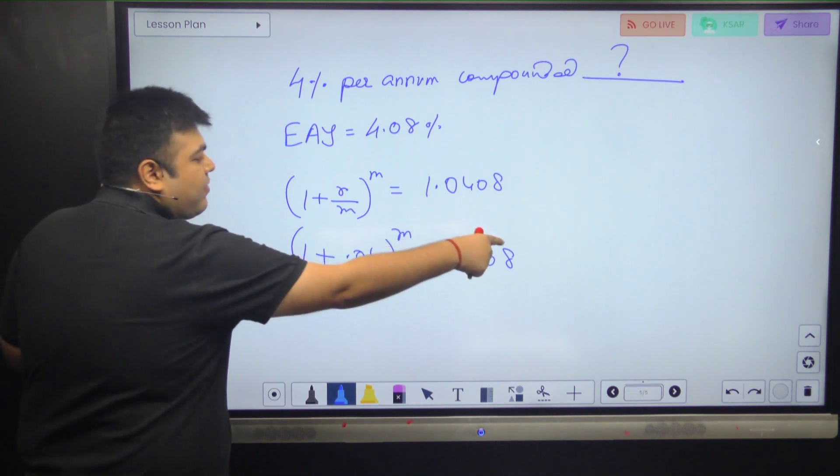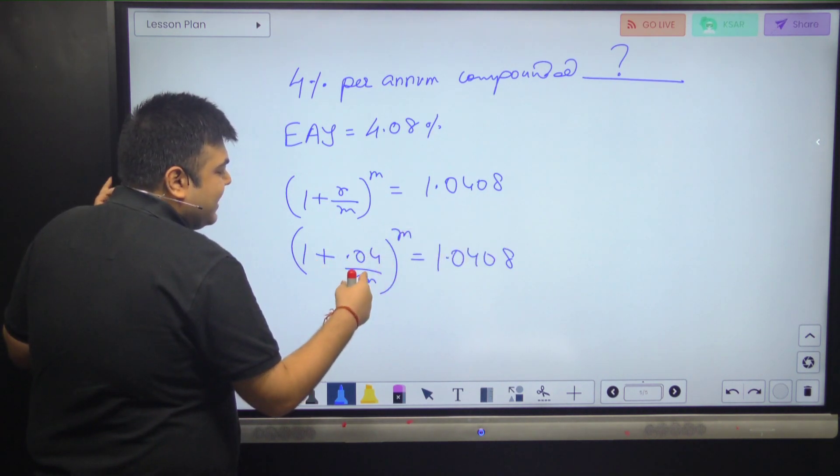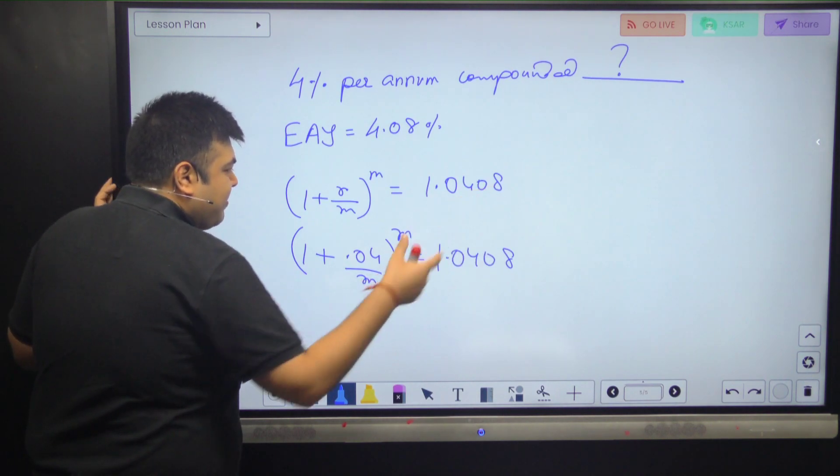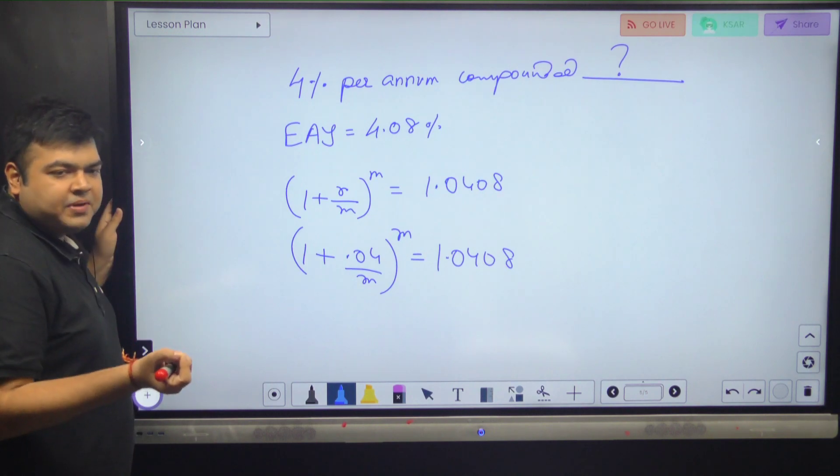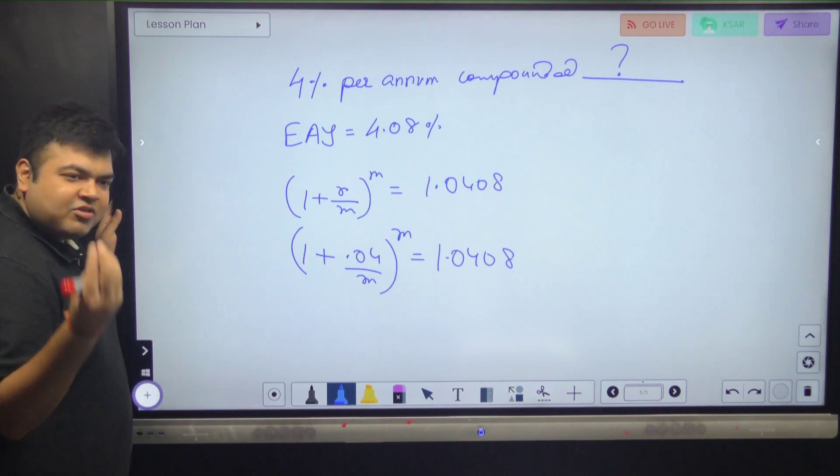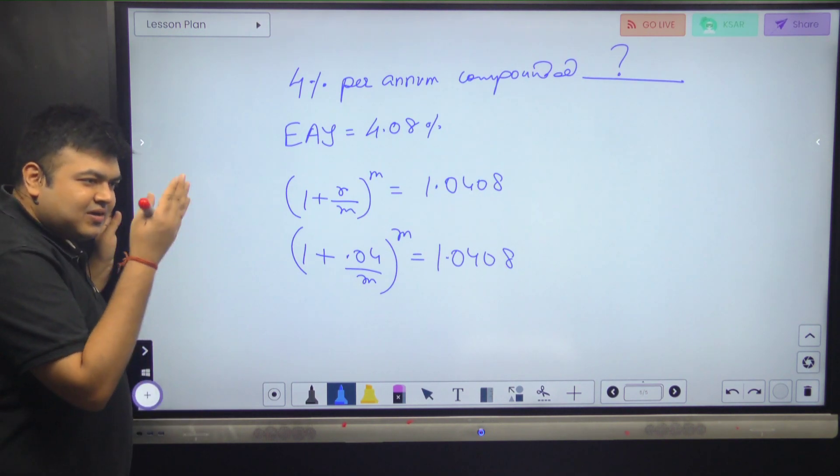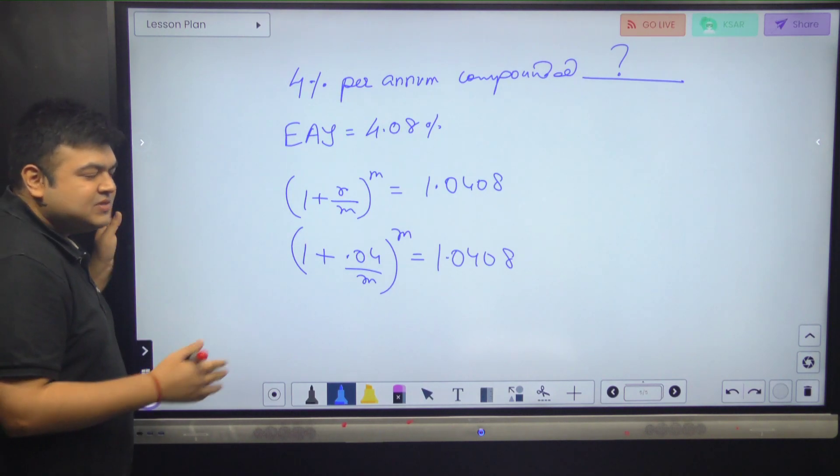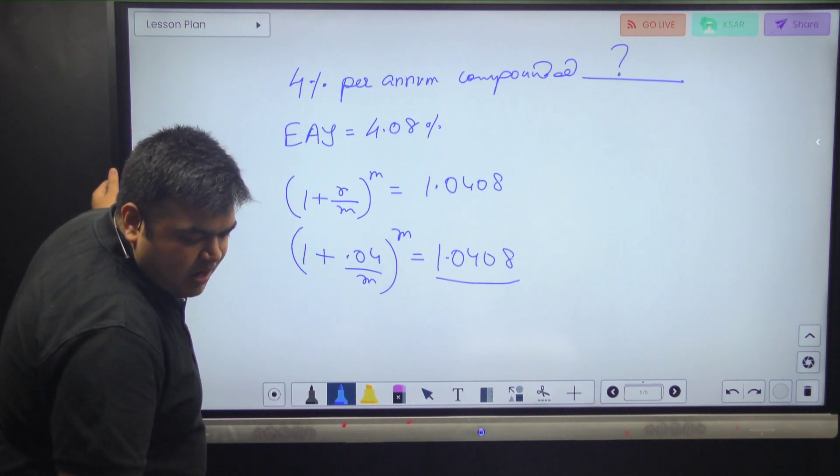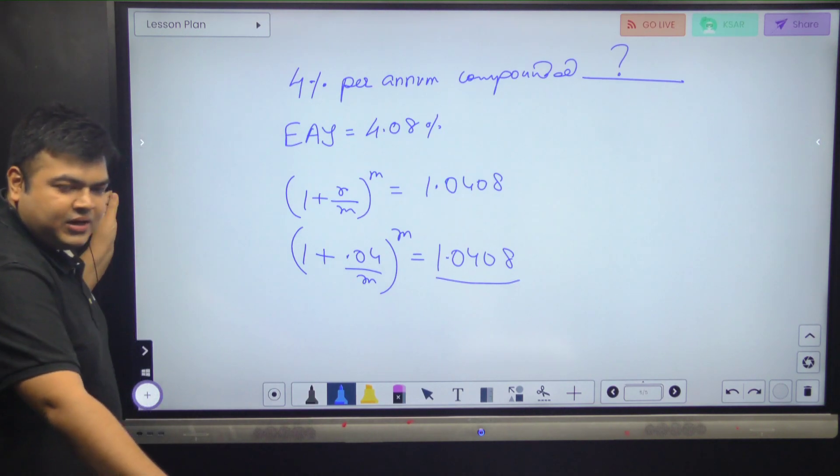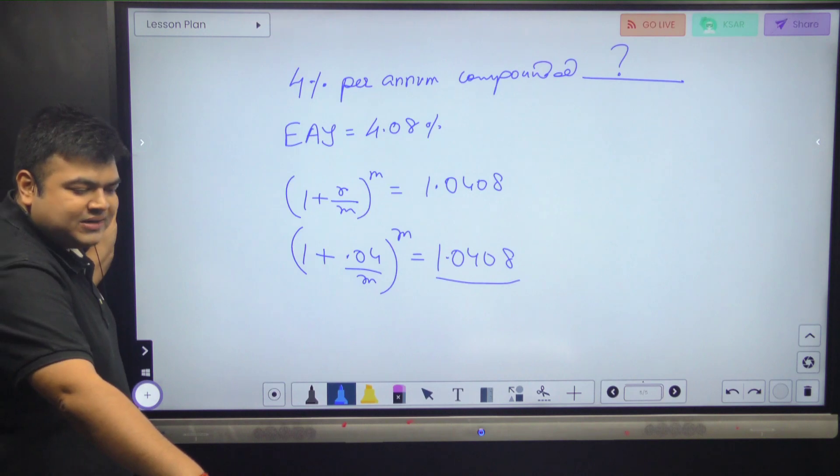Now the question is, how do you solve this equation? Even if I take a power 1 by M, then minus 1 and into M, it becomes a complicated equation to solve. It's a very simple question. All you have to do is there are three options. You evaluate this formula with each of the three options and check which one is going to give you 1.0408. The compounding frequency given are daily, quarterly, semi-annually.